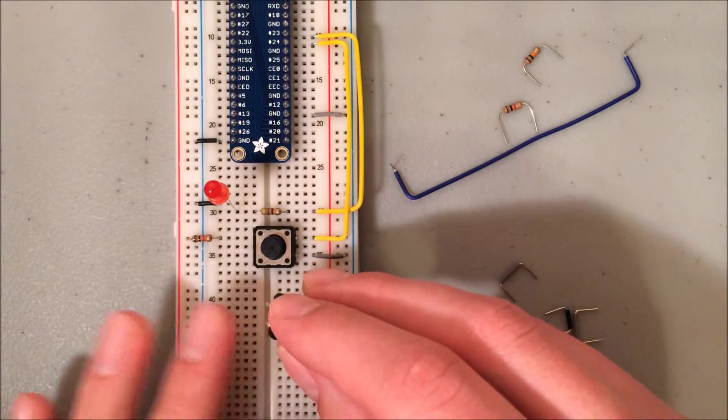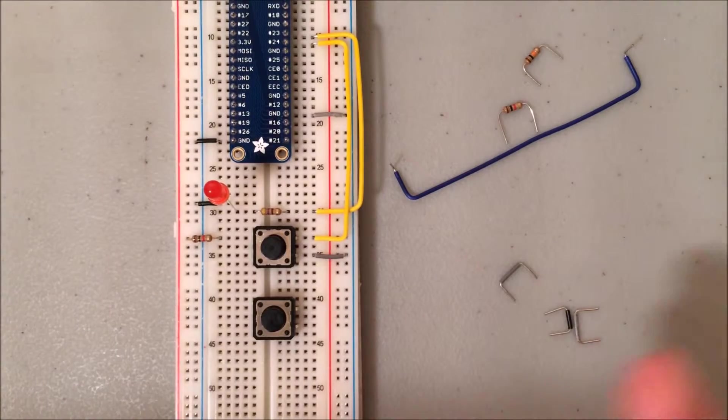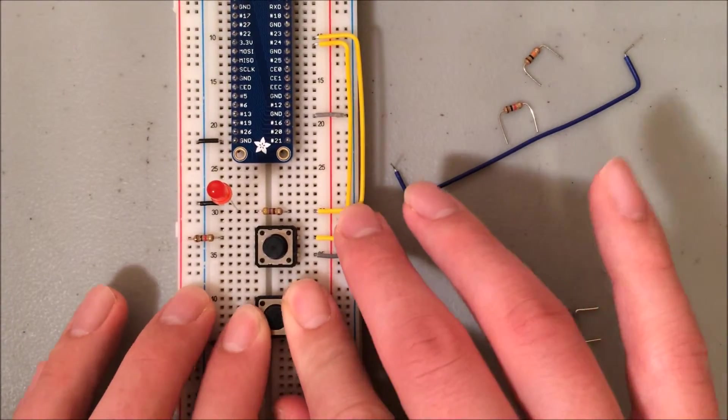Again, I want the legs pointing to the left and right sides, so 41 and 43, and again I favor placing the button further to the right. Once I've lined up, I'm going to press it down.